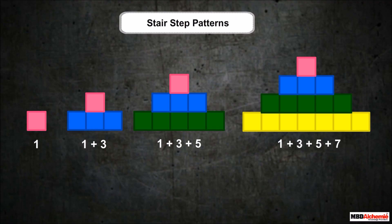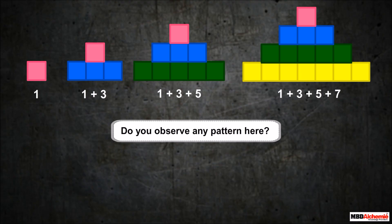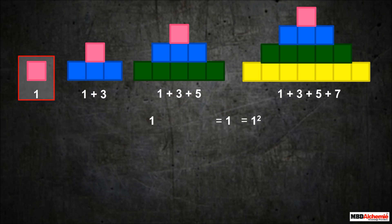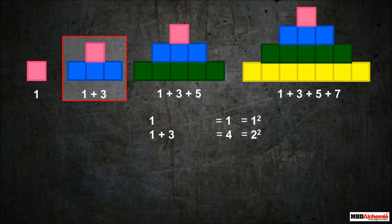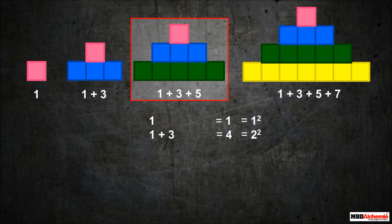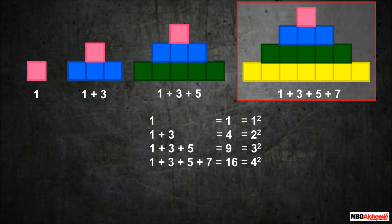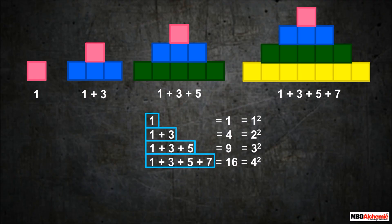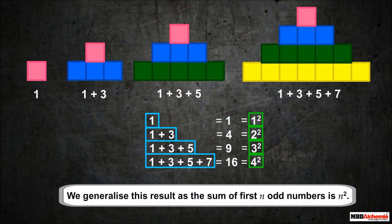Here are some stair-step patterns. Do you observe any pattern here? Consider the following: the square of 1 is 1. The sum of 1 and 3 is 4, which is written as 2². The sum of 1, 3, and 5 is 9, which is written as 3². Similarly, the sum of 1, 3, 5, and 7 is 16, which is written as 4². We observe that on the left-hand side there is a sum of odd numbers, and on the right-hand side we get square numbers. We generalize this result as: the sum of the first n odd numbers is n².